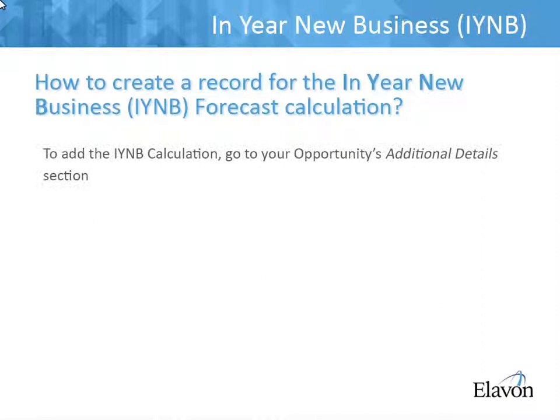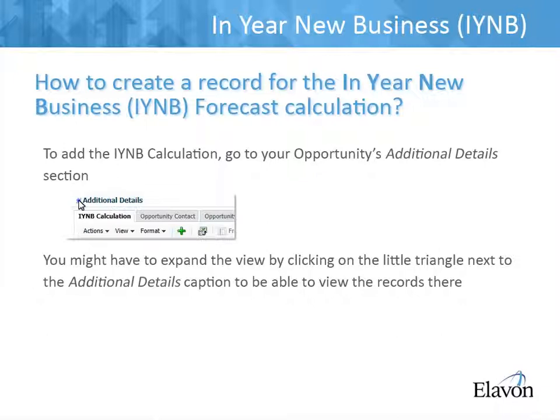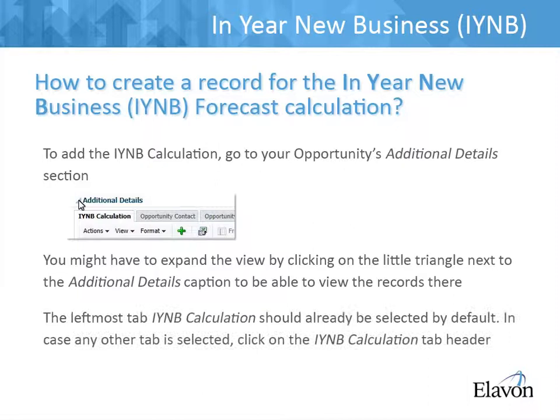To add the In-Year New Business calculation, go to your opportunity's Additional Details section. You might have to expand the view by clicking on the little triangle next to the Additional Details caption to be able to view the records there. The left-most tab, IYNB Calculation, should already be selected by default. If this is not the case and another tab is selected, simply click on the IYNB Calculation tab header.